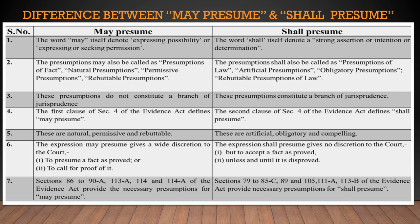May presumption does not constitute a branch of jurisprudence, whereas shall presume constitutes a branch of jurisprudence. May presume is described under the first clause of Section 4 of the Evidence Act, and shall presume is described under the second clause of Section 4 of the Evidence Act. May presumes are natural, permissive, and rebuttable, whereas shall presume are artificial, obligatory, and compelling.